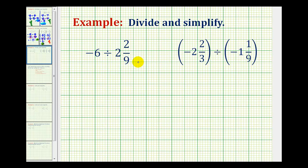To perform division involving signed mixed numbers, we'll first convert the mixed numbers to improper fractions, and then we'll convert the division problems to multiplication problems, simplify, and then multiply.